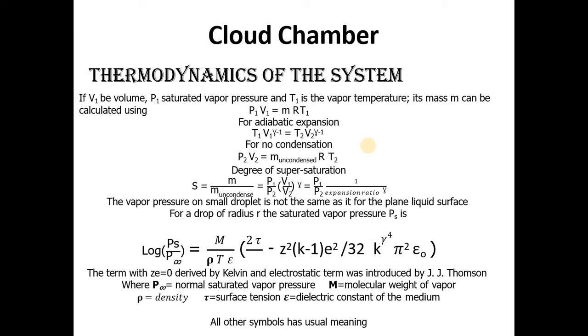The vapor pressure on small droplet is not the same as it is for the plain liquid surface. For a drop of radius R, the saturated vapor pressure PS is given by the following relationship. In this relationship, the term with Z equals zero was derived by Kelvin, and the electrostatic term was introduced by JJ Thompson. Where P infinity equals normal saturated vapor pressure, M equals molecular weight of vapor, rho equals density, tau equals surface tension, epsilon equals dielectric constant of the medium, and all other symbols have usual meanings.